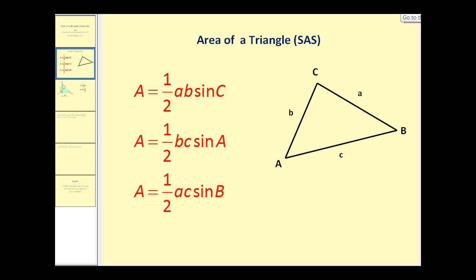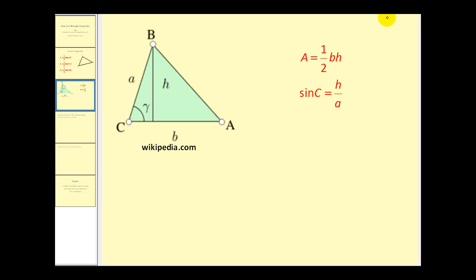Let's take a look at where these formulas come from. If we have any triangle ABC and construct an altitude from vertex B, so it's perpendicular to the opposite side, it forms two right triangles. We know the area of any triangle is one half times the base times the height.